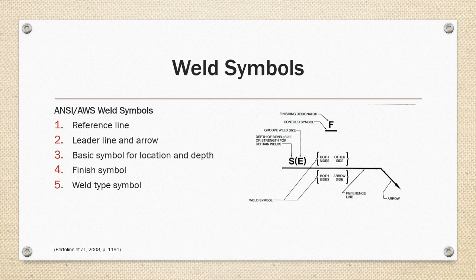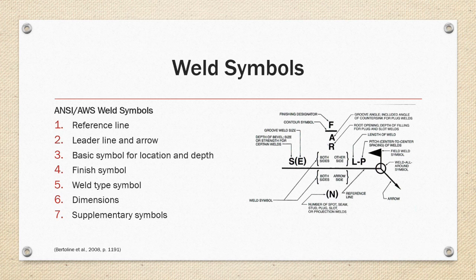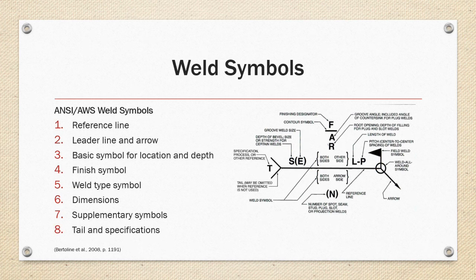The opposite side of the reference line refers to the opposite side of the material that the arrow is pointed to. Dimensions may also occur for the length of weld and the pitch or center-to-center spacing. There's a whole host of supplementary symbols, such as the field weld symbol, the weld-all-around symbol, and number of spots or seams. Groove angle and root openings can also be defined. All this information isn't absolutely necessary; if omitted, it's left up to the interpretation of the welder. The last element is a tail with specifications, which is often omitted, and would denote a specific process and references to specific specifications.